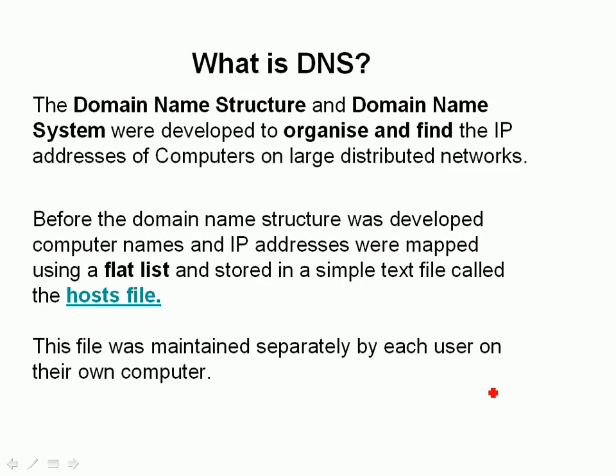So what is DNS? Well, it consists of two components: a structure and a system, and it was designed to organize and find IP addresses of computers on very large distributed networks. Before we had the domain name system, computer names and IP addresses were mapped using a flat list and stored in a simple text file called the host file.